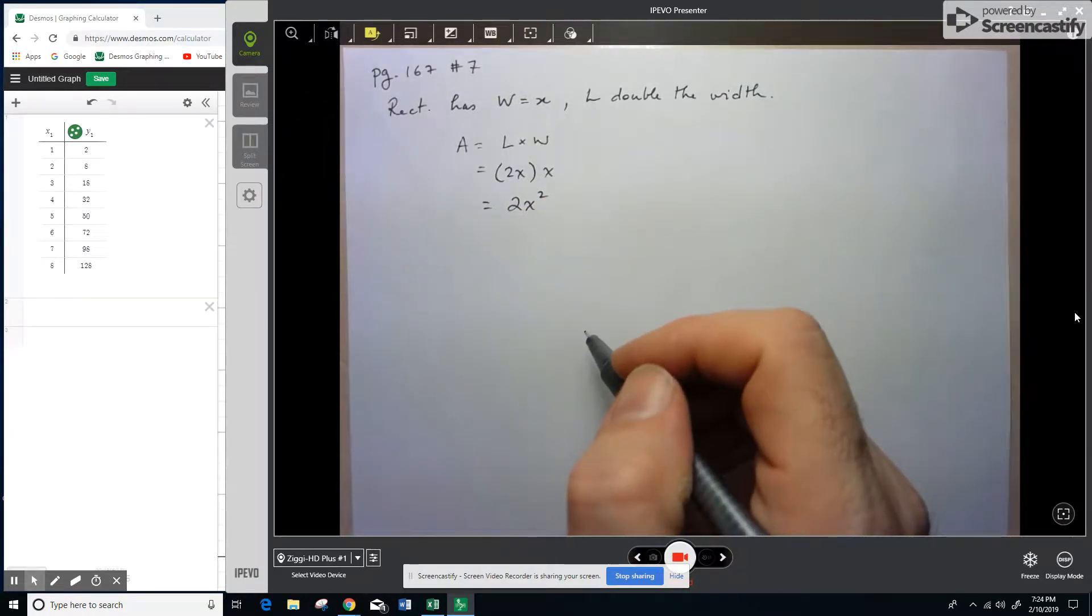So the question that they ask us in part D is to explain why the graph of this relation is nonlinear.